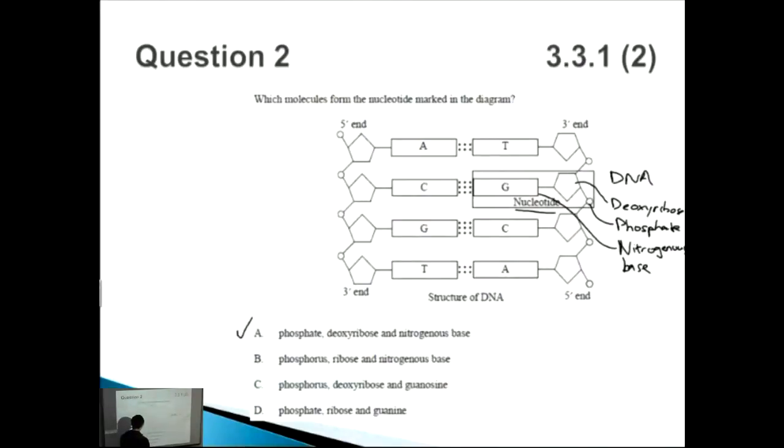How about B? Phosphorus, ribose, and nitrogenous base. Well, it's not ribose, we know it's deoxyribose - remember the DNA. So that doesn't sound right. And it's also not phosphorus, it's phosphate, so this one's wrong. How about C? Phosphorus - no, once again no. And guanosine - I guess it could be because it says G, but we know from the earlier answer that phosphorus is not correct. How about the last one, D? Phosphate, ribose, and guanine. So once again we know it's not ribose but more deoxyribose. So therefore the correct answer is A.